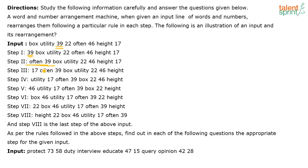So first 39 comes, then it keeps moving and 17 comes. After the odd numbers are done, they start with the highest even number. So 39 first, then 17, then the next highest even number 46, then the next even number 22. That is the pattern being used for the numbers.